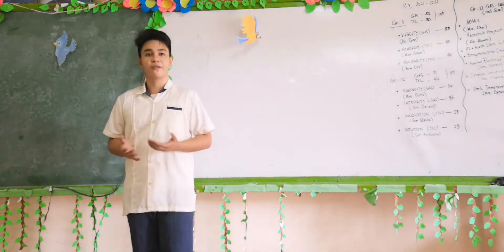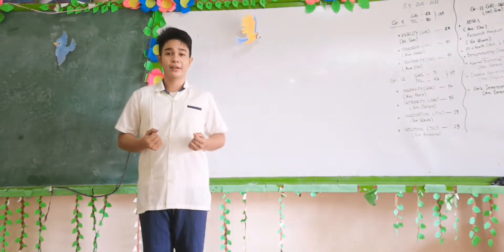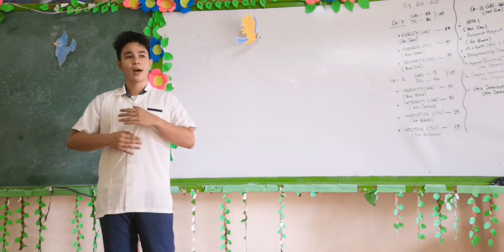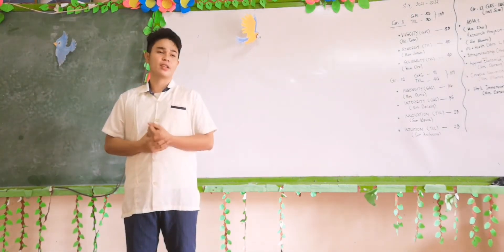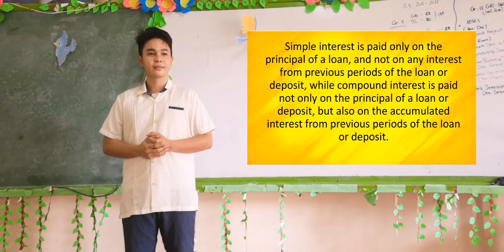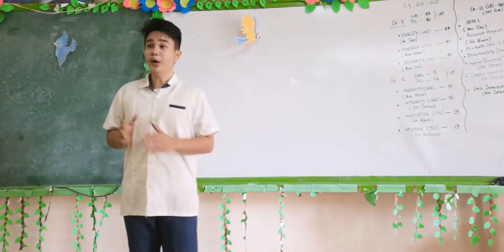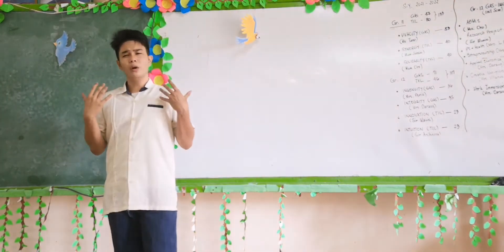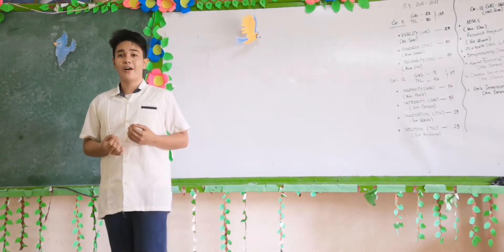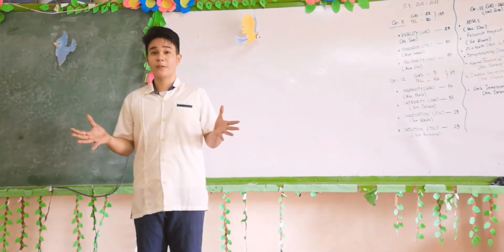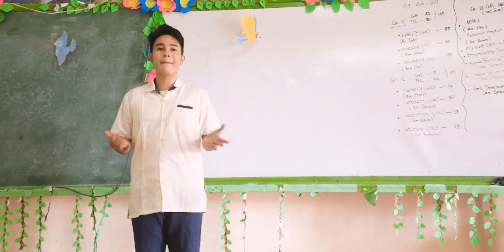After watching the video, what's the difference between simple and compound interest, aside from what we defined a while ago? If you are to invest, which would offer you a better return on investment — a bank that offers simple interest or a bank that offers compound interest?